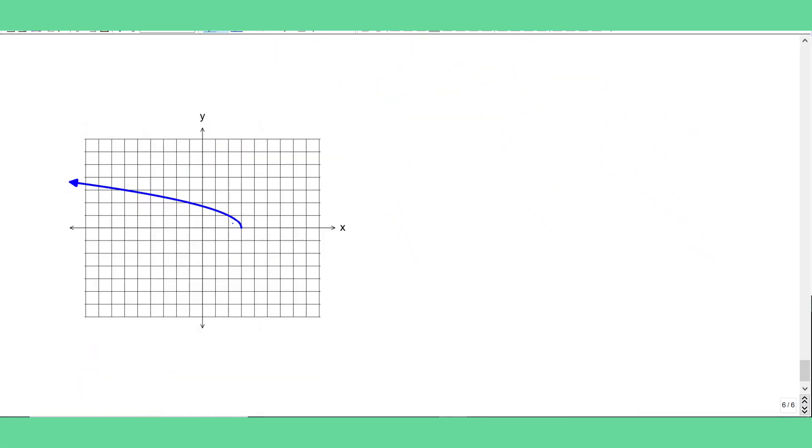Just going to do one more. Again, just pick some dots you can easily see the values of. So this is the point 3, 0. Then this is 2, 1. This next one looks like negative 1, 2. And this is negative 6, 3.